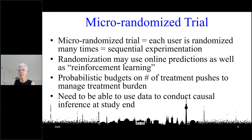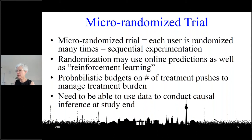More generally, and looking toward the future, the randomization is going to depend on some algorithms. This is mainly because there's usually a probabilistic budget — the scientific team is concerned about burden on the individual, so they specify ahead of time that, on average, the individual should only receive two messages per day. As a result, the randomization ends up using algorithms such as online predictions and what we'll call reinforcement learning.